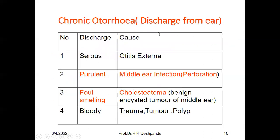Chronic otorrhoea means discharge from the ear. According to the nature of the discharge, you can diagnose the cause. If the discharge is serous, the cause may be from the external ear. If the discharge is purulent, it is definitely middle ear infection with perforation of the tympanic membrane. If the discharge is foul-smelling, the cause is cholesteatoma — a benign tumor of the middle ear. If the discharge is bloody, the cause may be trauma, tumor, or a foreign body in the ear.